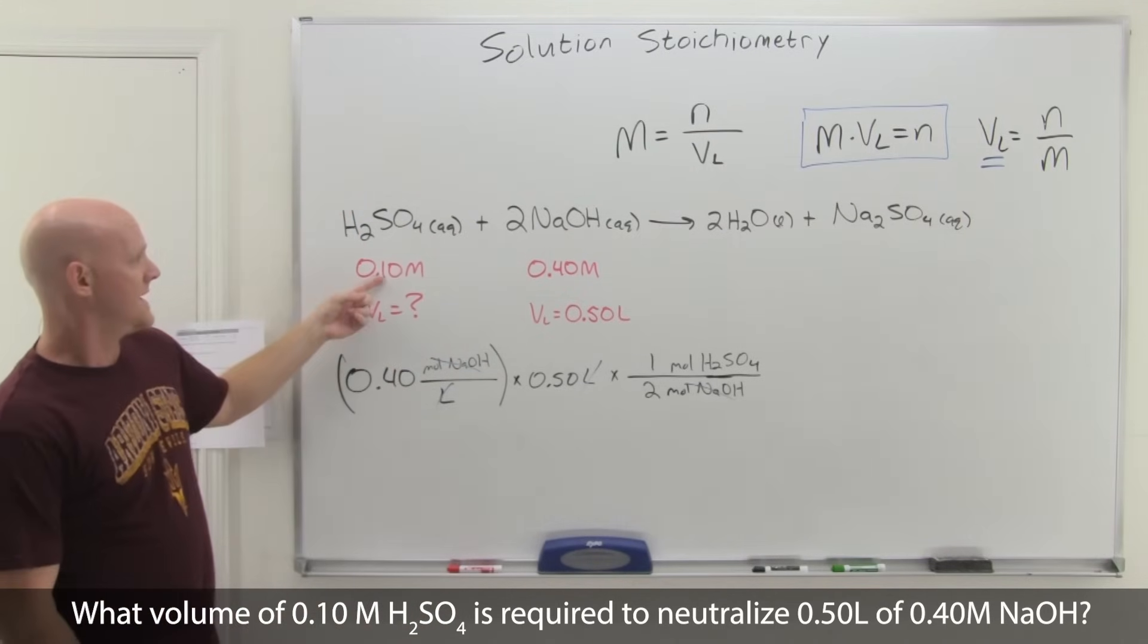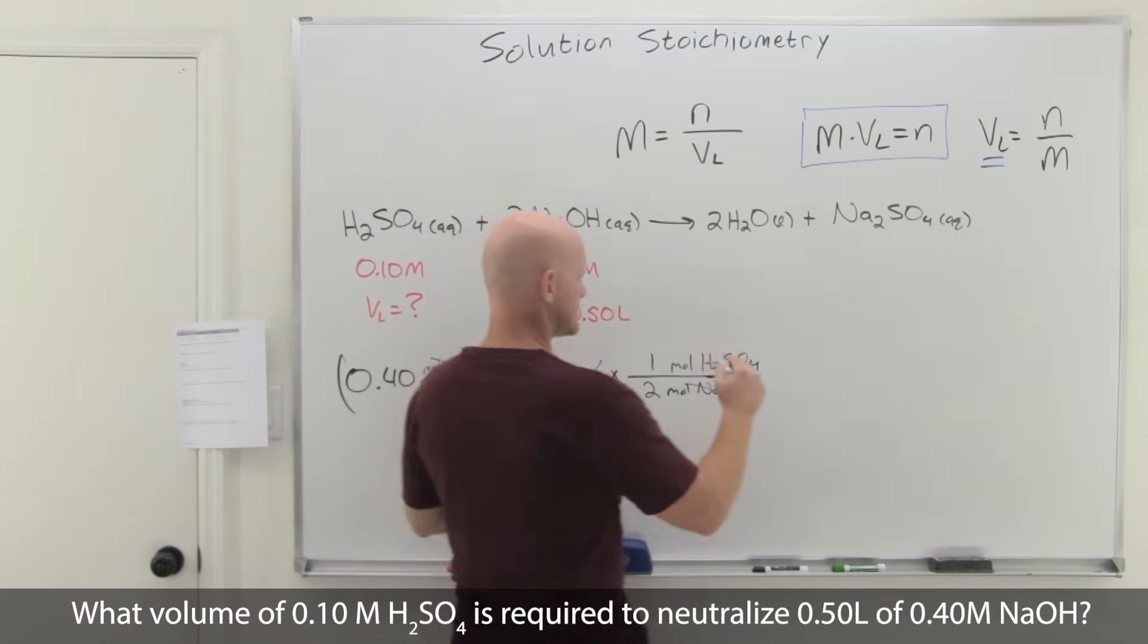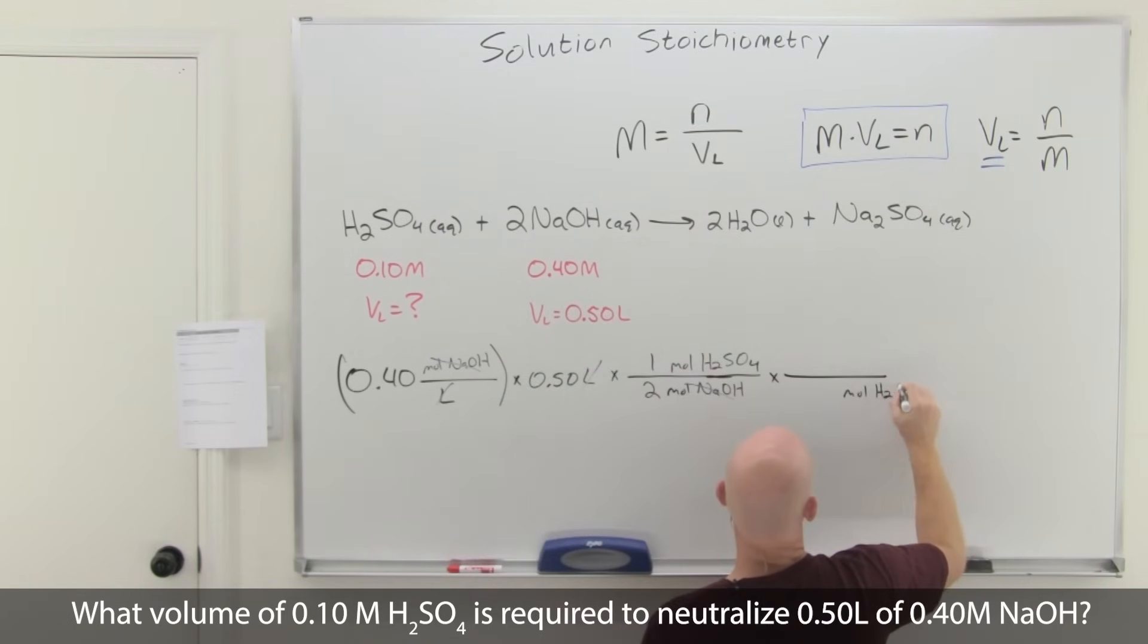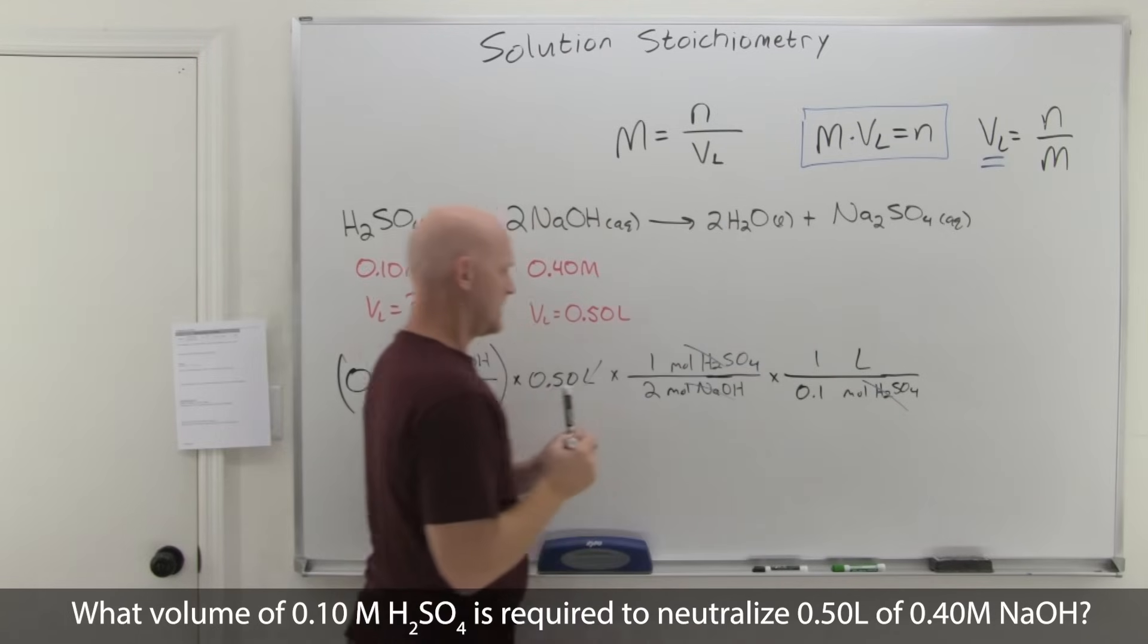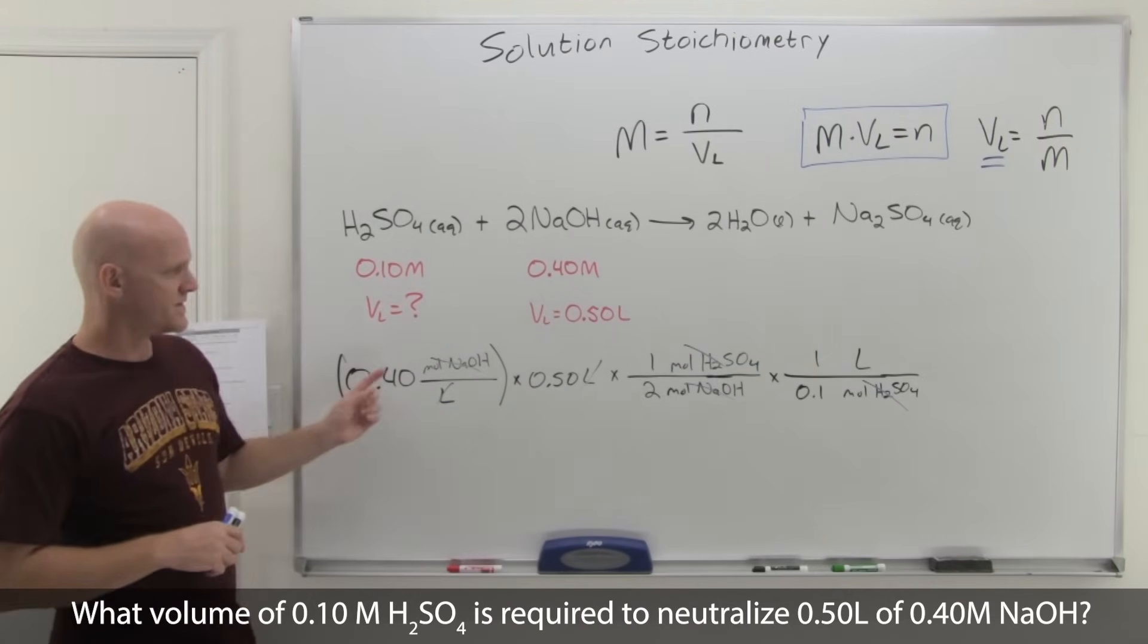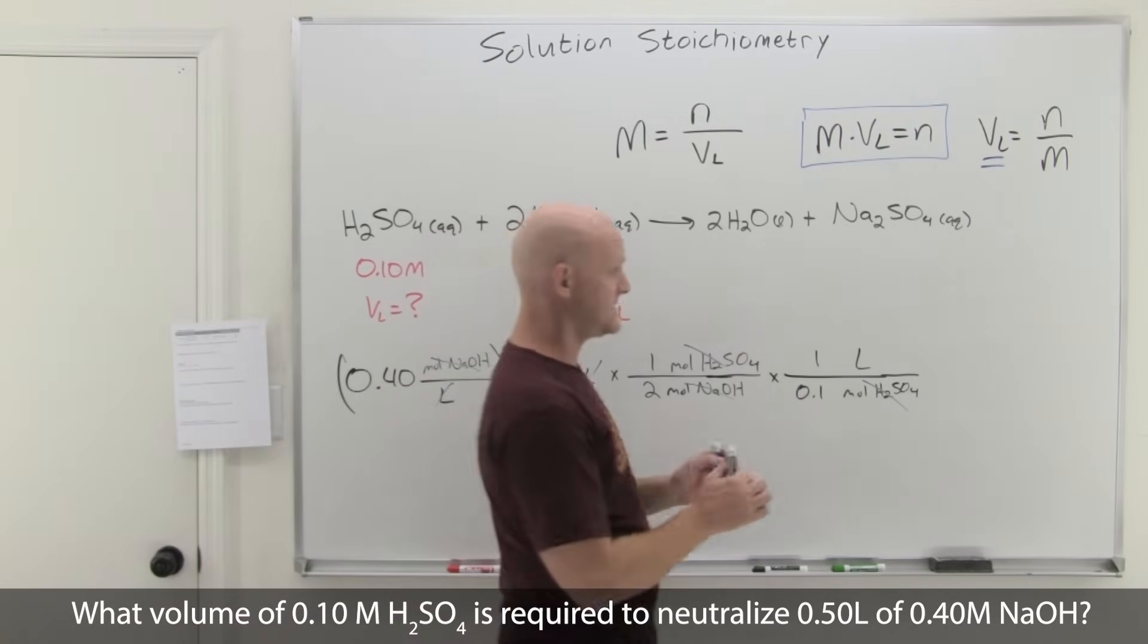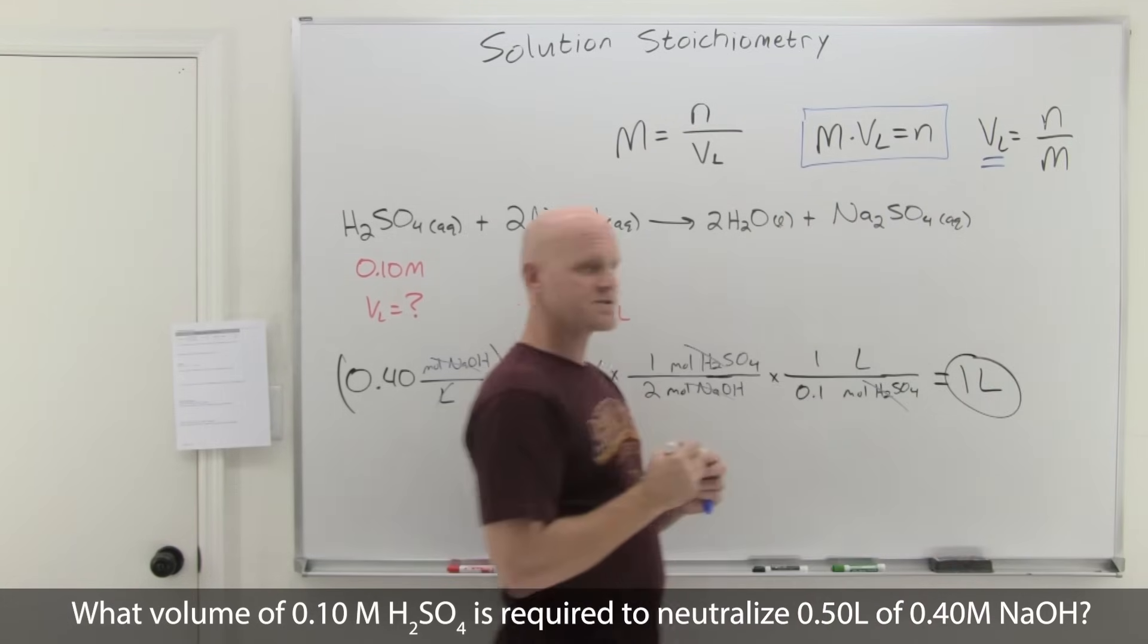You could also finish off the dimensional analysis. Remember that 0.1 molar means moles per liter. If you could work out the dimensional analysis, you would need moles of H2SO4 in the denominator, liters on top. 0.1 molar means 0.1 moles per one liter. That's going to get us our answer in liters. In this case, 0.4 times 0.5 is 0.2, 0.2 divided by 2 is 0.1, and 0.1 over 0.1 is simply equal to 1. We're going to need one liter of our H2SO4 solution.